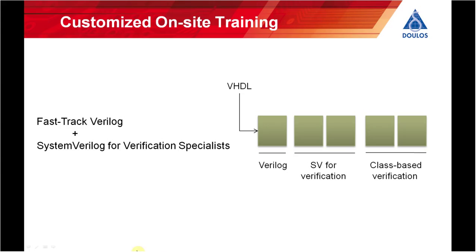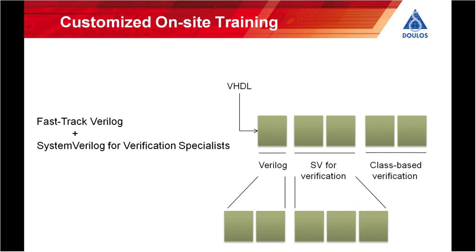At Doulos we can mix and match training courses and tailor them to your specific requirements. One of the most popular combinations for VHDL users is running Fast-Track Verilog for VHDL Users back-to-back with System Verilog for Verification Specialists as a five-day class. This is popular where a team of VHDL users is moving to System Verilog but wants to fit training within five days. However, this is a compromise — it compresses two days of Verilog training into one day, and System Verilog for Verification Specialists already compresses three days into two, giving you effectively seven days of training in five.